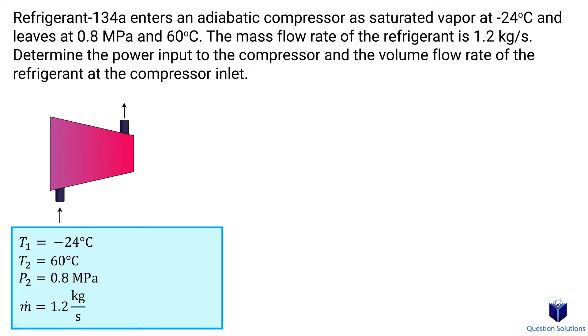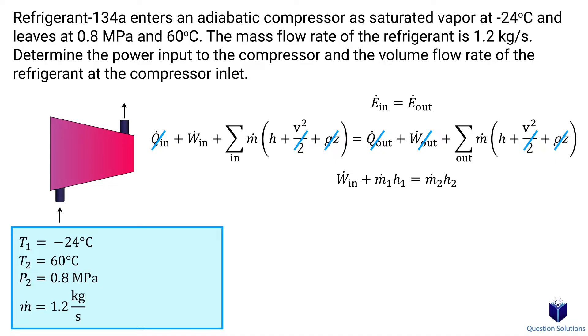So to find the power input, we can write an energy balance equation. We expand the equation to account for all the types of energy that can be associated with the steady flow system. Now since this is a compressor problem, rate of heat transfer, kinetic energy, and potential energy is negligible. Again this is a compressor, which means there is work input, but no work output. So our equation simplifies to this.